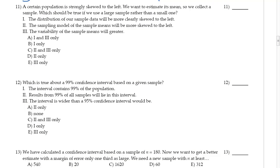So here's 11: a population which is strongly skewed to the left. We had one of these in video number one or two, but now we're skewed to the left. We want to estimate its mean, so we collect a sample. Which should be true if we use a large sample rather than a small one? So I'm talking about a larger n versus a smaller n. And if I'm strongly skewed to the left, let's see if I can draw strongly skewed to the left. So here's my strongly... and so my mean is going to be somewhere in here.